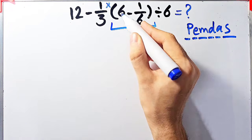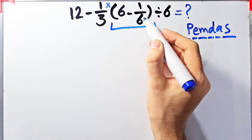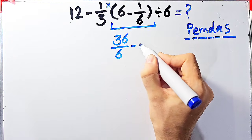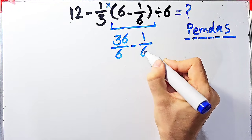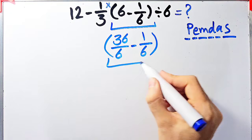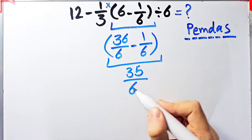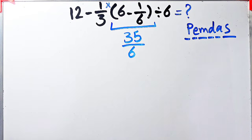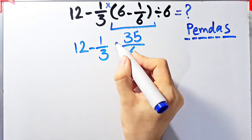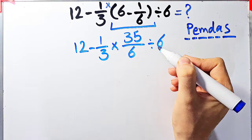According to the PEMDAS rule, first we simplify the parentheses. We have 6 minus 1/6. Since the denominator of this fraction is 6, we can write 6 as 36/6. Now we have 36/6 minus 1/6, which equals 35/6. The final answer of these parentheses equals 35/6.